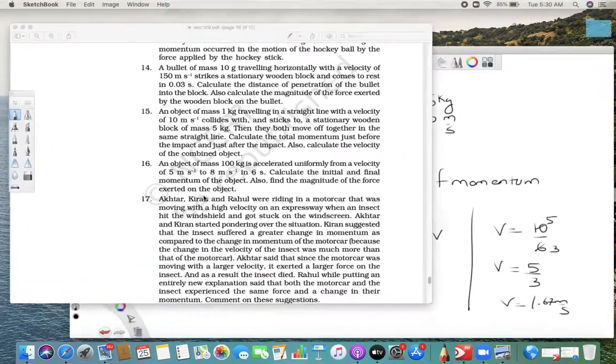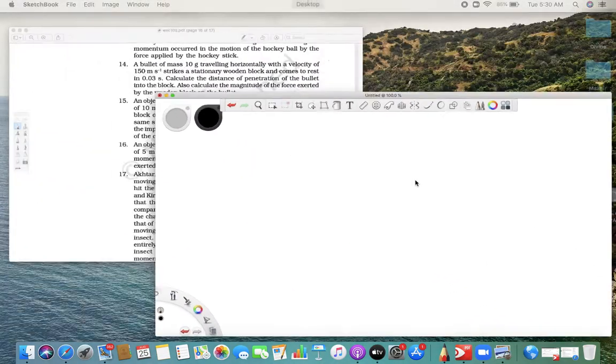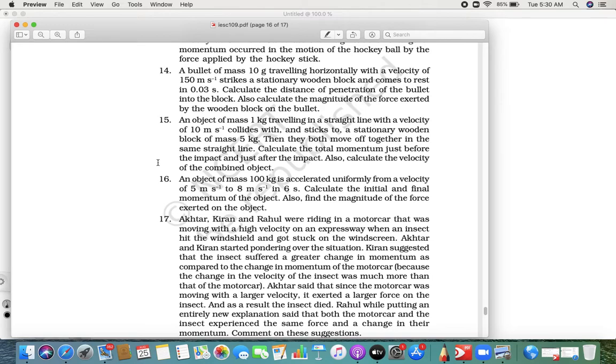Now let's see the next one. There is an object of mass 100 kg that is accelerating uniformly from an initial velocity of 5 meter per second. Its speed increases to 8 meter per second in 6 seconds. So basically we have given mass m that is 100 kg, u is given as 5 meter per second, v is given as 8 meter per second, and time is given as 6 seconds.